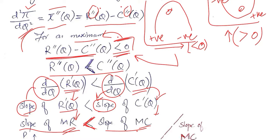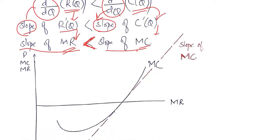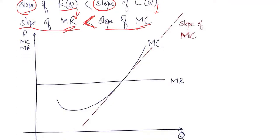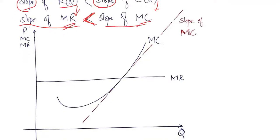We have developed the condition for profit maximization. In the diagram we can see the same thing happening — Q is on the x-axis and price, marginal cost, and marginal revenue are on the y-axis. The standard way of plotting marginal revenue in perfect competition is a horizontal line, and marginal cost has a U-shaped diagram. The slope of the marginal cost curve at a point is given by the tangent line.